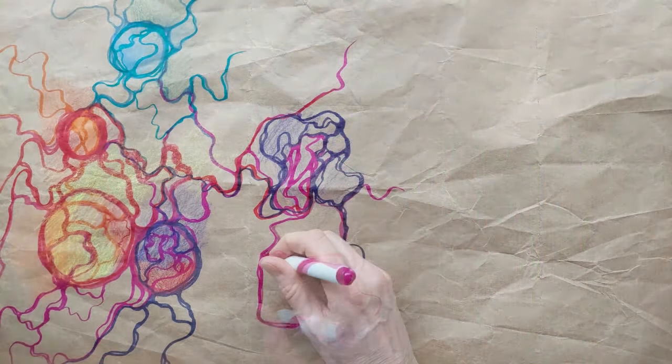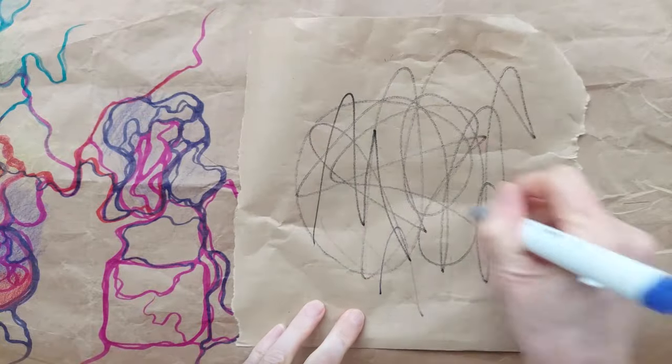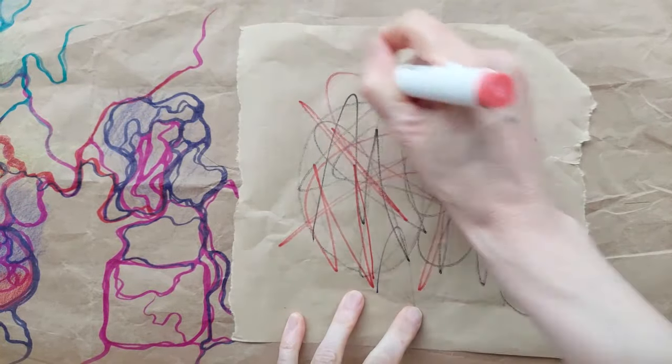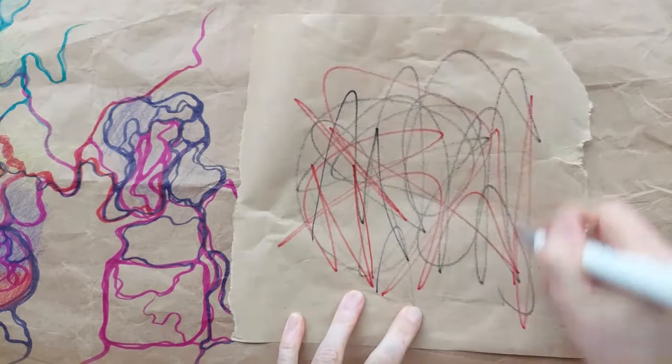Without hesitation, Grace grabbed a sheet of paper and began drawing the wavy lines she had observed in the artist's drawings. Starting slowly, she focused on the lines, but soon her hand gained momentum, moving in a frenzy of up and down, left and right. Driven by uncontrollable energy, she took another sheet and continued the cathartic release.